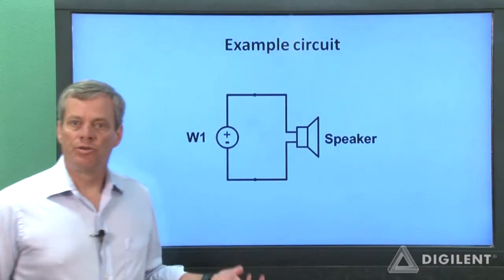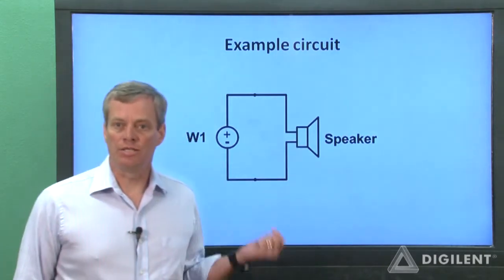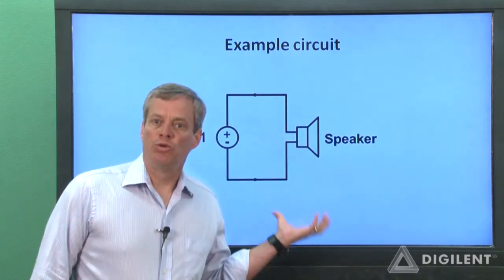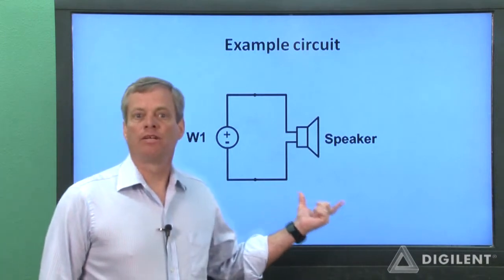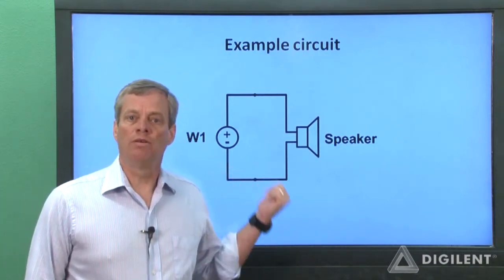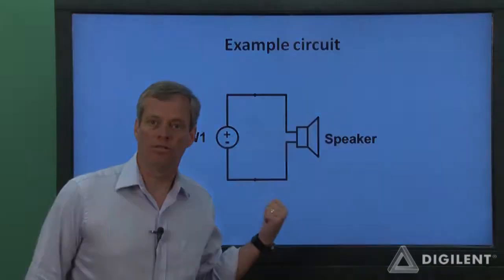As in the last few introductory AWG projects, we're creating an audio signal that we want to listen to. The circuit we'll use is the same one as was used in the 2nd, 3rd, and 4th AWG projects—simply a speaker connected to channel 1 of the AWG. Also, as before, I'll be using a set of speakers connected to the headphone jack on the Analog Discovery to play back my signals.